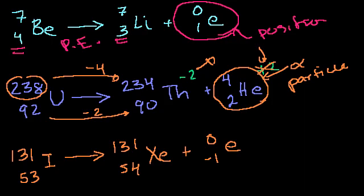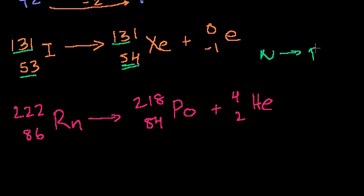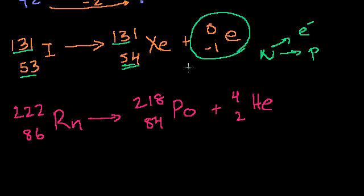Now let's do another one. Here I have iodine. My mass is not changing, so I must just have protons turning into neutrons or neutrons turning into protons. I see that I have 53 protons and now I have 54 protons. So a neutron must have turned into a proton. The way a neutron turns into a proton is by releasing an electron, and we see that in this reaction — an electron has been released. So this is beta decay, and this is a beta particle.